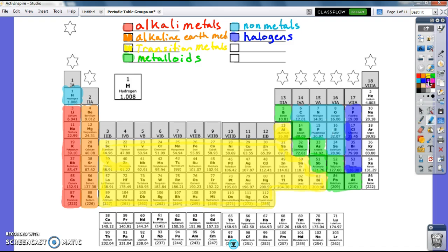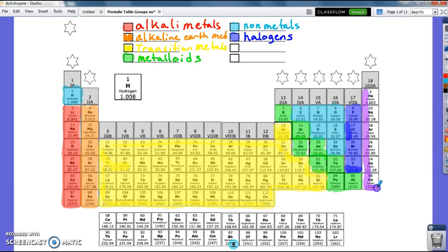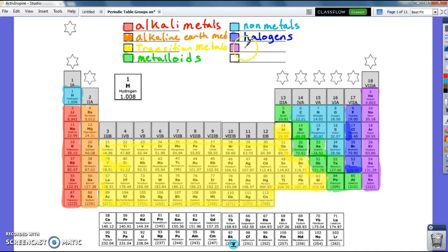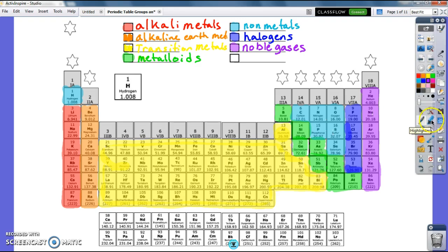Our last group over here on the right side are called the noble gases. I'm making them purple because purple is the color of nobility. The noble gases are the ones that are the most desirable. All the elements want to look like the noble gases. They all want to be royals. So we've got our noble gases, the nobility of the periodic table. They're the most important, at least they think they're the most important.